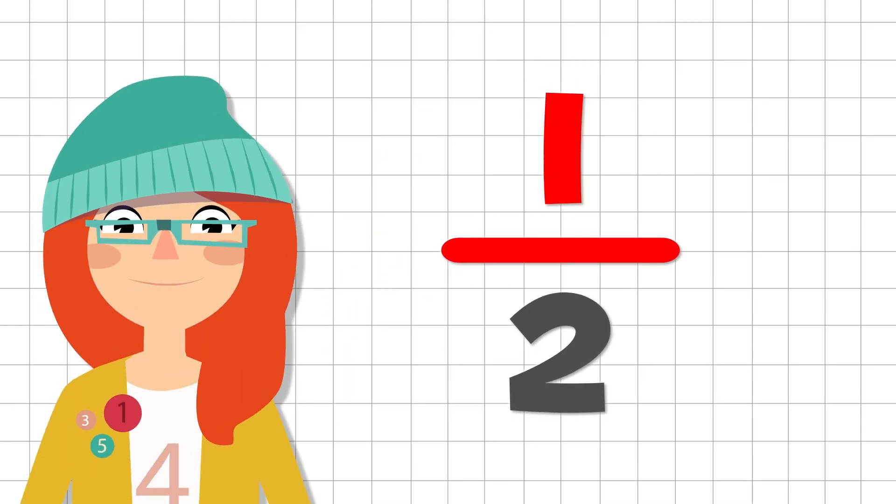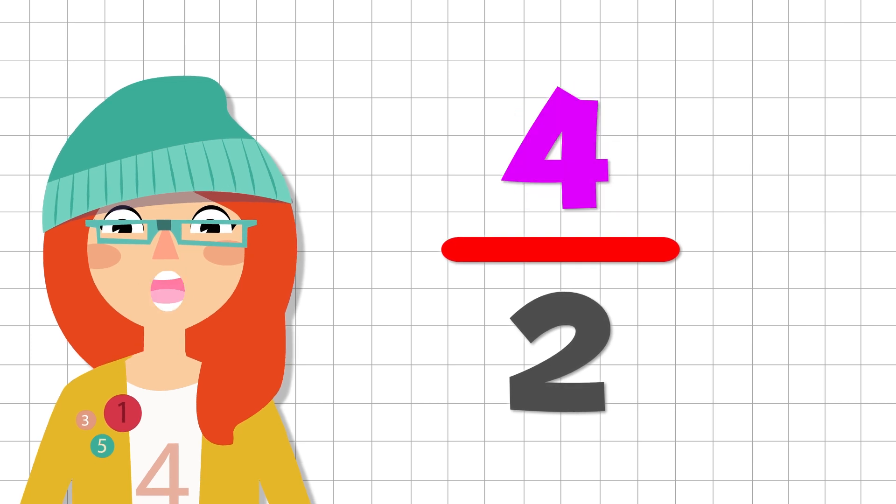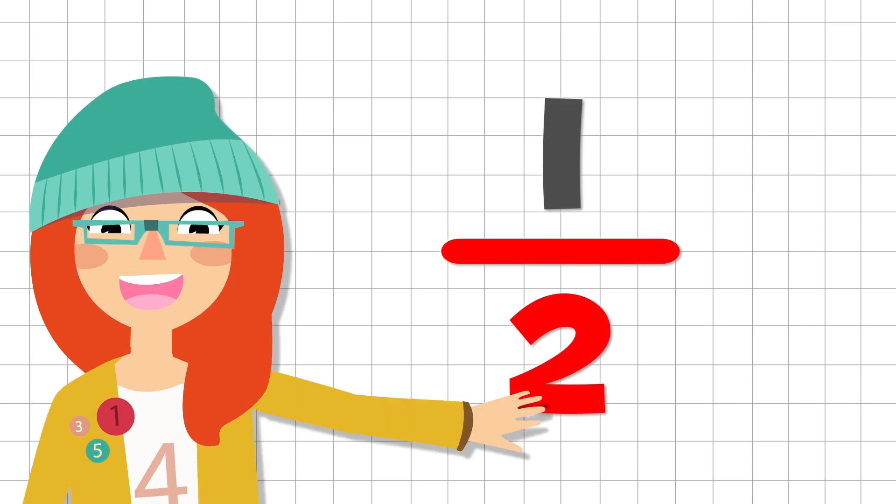We read the numerator as we would normally read any number. One, two, three, four, five, six, seven. The number we read differently is the denominator.